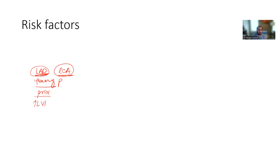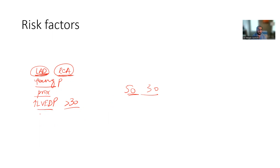High LV EDP is another risk factor. If you're starting with an EDP of 30+, there are high chances the patient will develop no reflow because diastolic pressure determines flow. If your diastolic pressure in the aorta is like 50 and diastolic pressure inside the heart is 30, you only have a perfusion pressure of about 20. Females are at higher risk, though in my experience males are also equally prone. Large thrombus burden is a big one. If there's TIMI zero flow to begin with, that's a big risk.